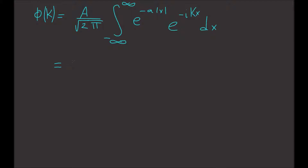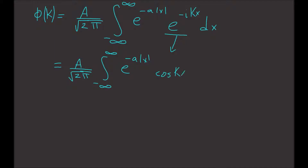We have A divided by square root of 2π times the integral from negative infinity to infinity of e to the minus a absolute value of x times — we can rewrite this using Euler's formula — cosine(kx) minus i sine(kx) dx. The cosine integral is even and the sine integral is odd, so since the sine term is odd, it vanishes and goes to zero.